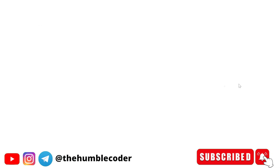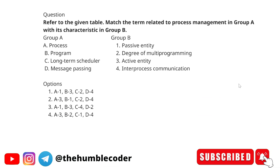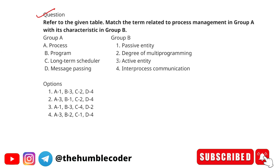The next question is another match-the-following, this time related to process management. Group A has: process, program, long-term scheduler, and message passing. Group B has: passive entity, degree of multi-programming, active entity, and inter-process communication. Let's start matching.